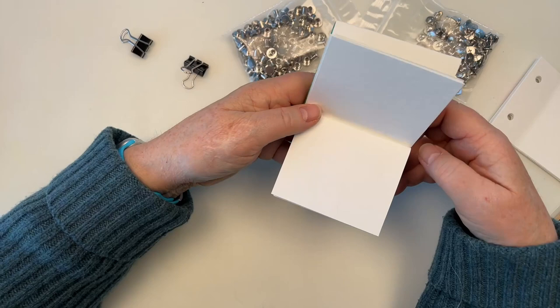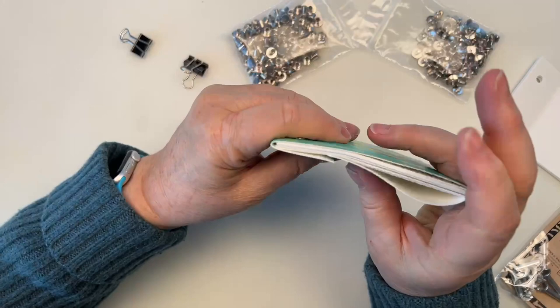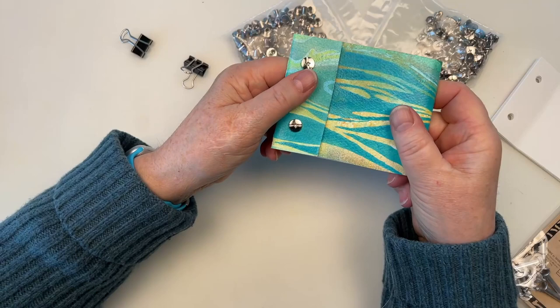In the next video I'll show you an example of that, plus a really pretty alternate binding that you can use if you're ready to bind a book more permanently and don't need to be able to open up the screw posts and rearrange things anymore.